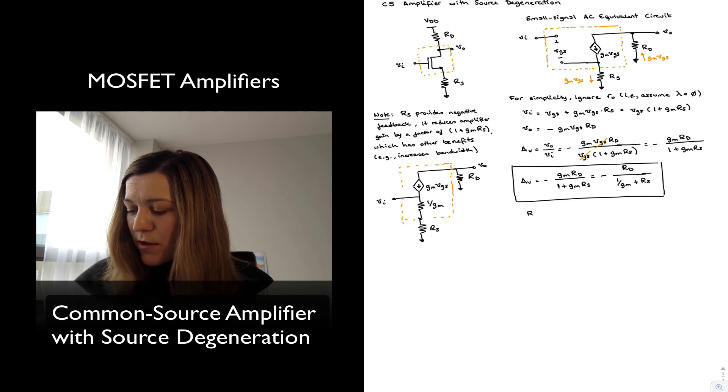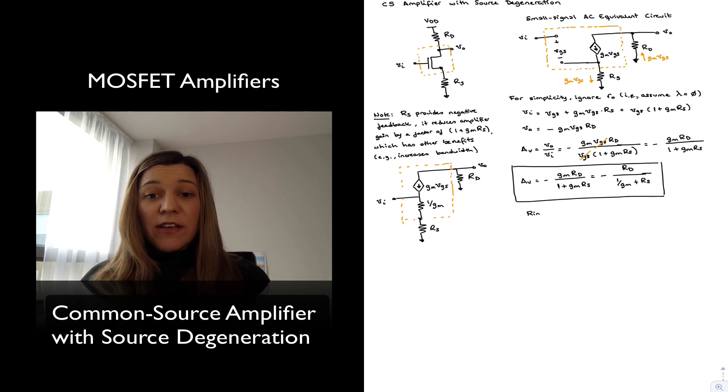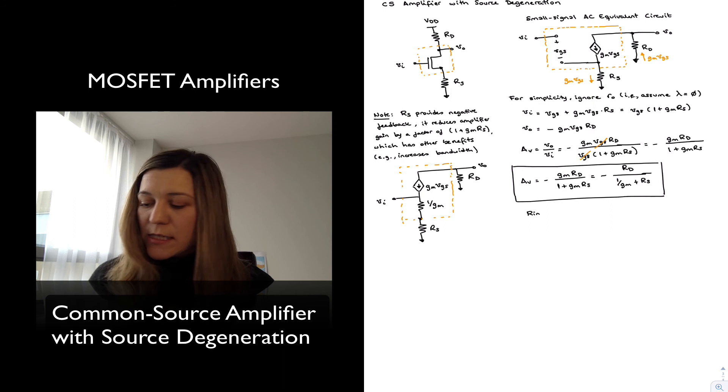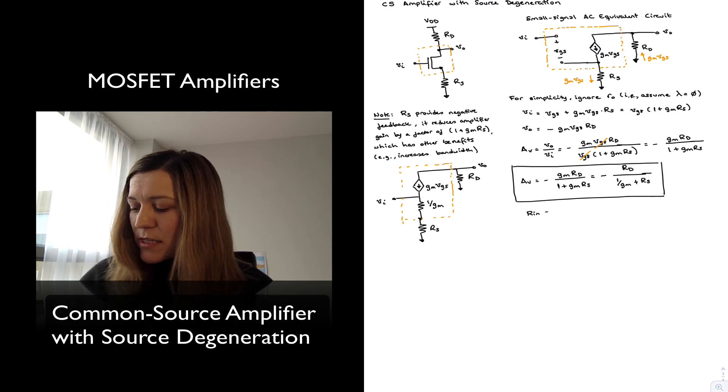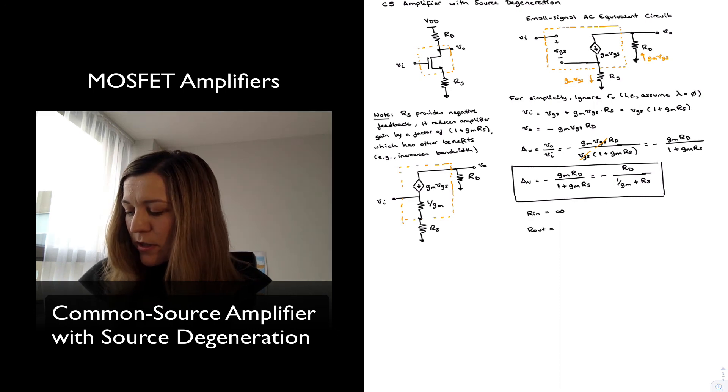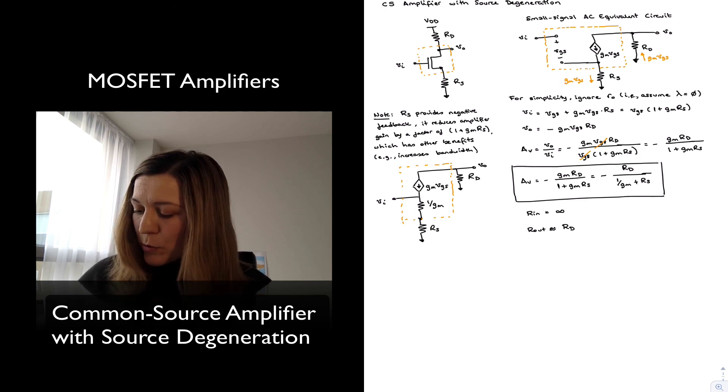In terms of how it affects the input resistance and output resistance, the input resistance is still infinity and the output resistance is still going to be approximately equal to RD. Typically, RD is just going to swamp the other term.